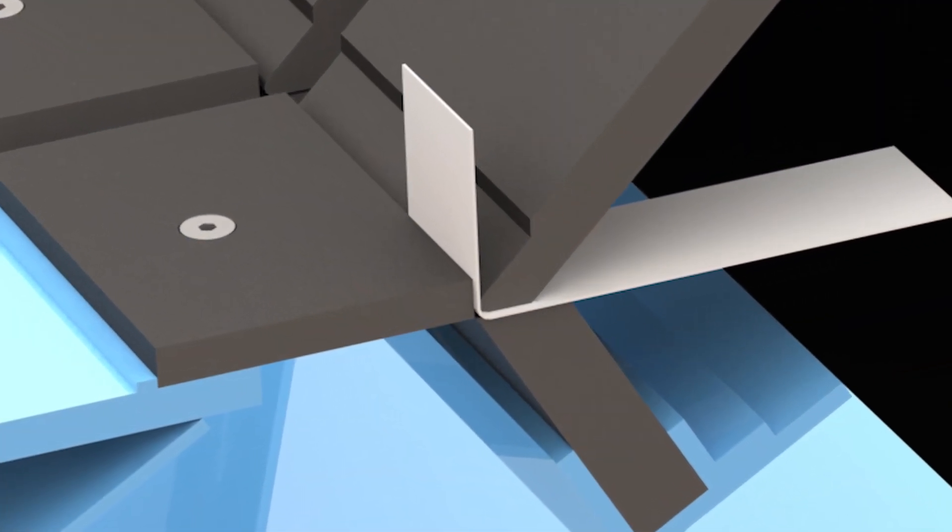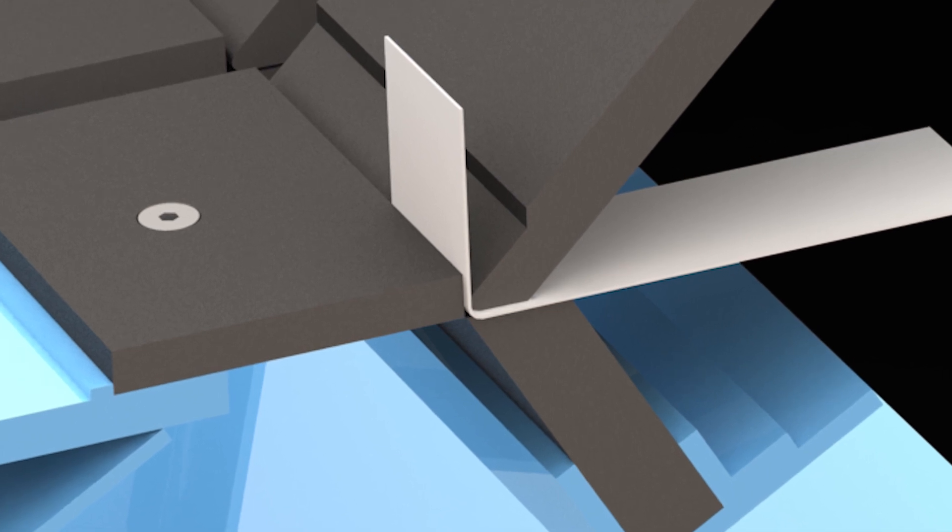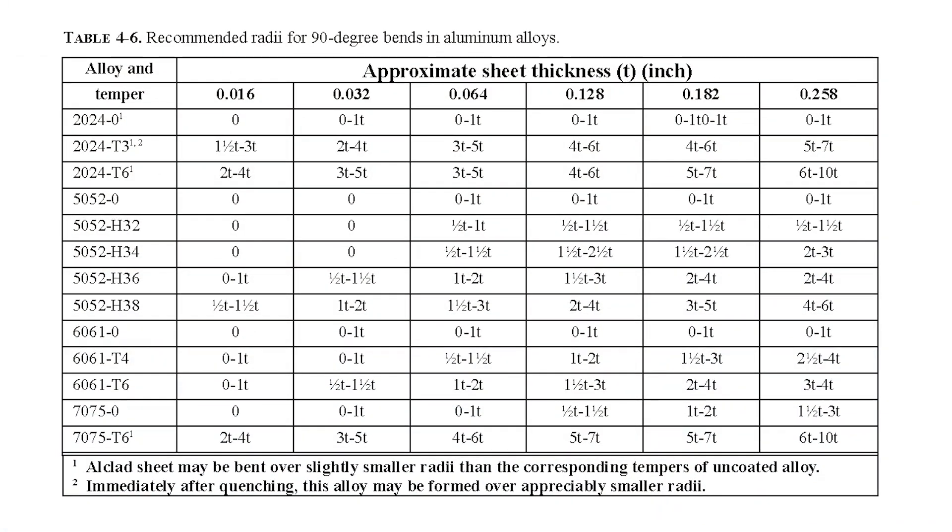In part one of this video, we talked about the necessity for bending aluminum around a radius and paying particular attention to minimum bend radius. The amount of force required to bend sheet metal tightly around a radius can be quite substantial.